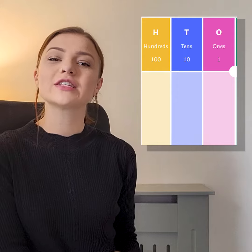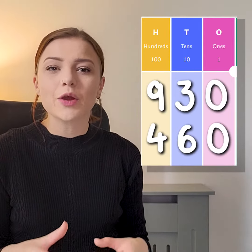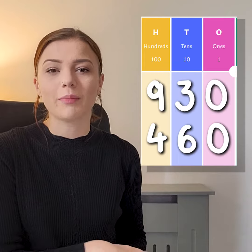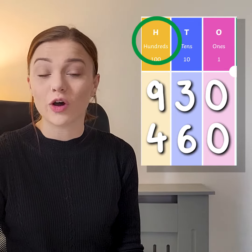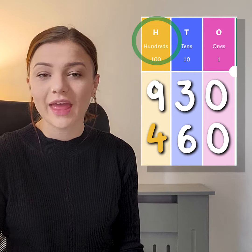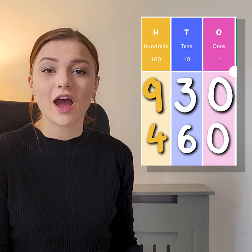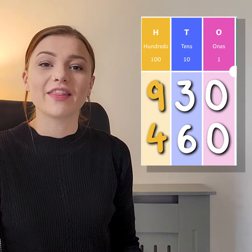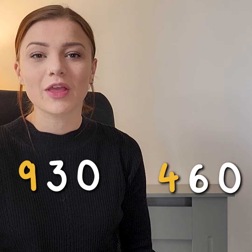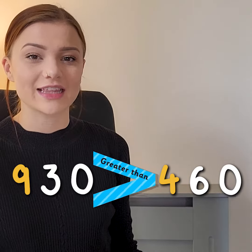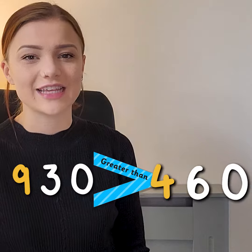Here are the numbers 460 and 930. In order to compare these two numbers, we need to look at the highest value column, which is the hundreds column. As we can see, 460 has a 4 in the hundreds column, and 930 has a 9 in the hundreds column. We know that 9 is greater than 4, and therefore 930 is greater than 460. We can show this using the greater than symbol.